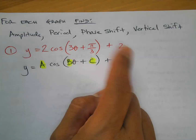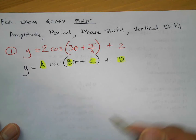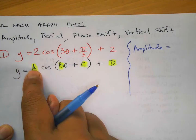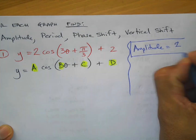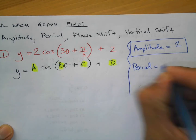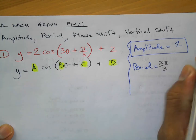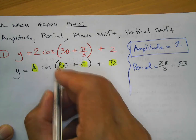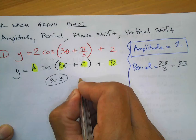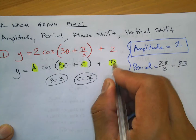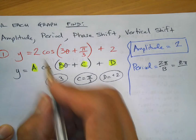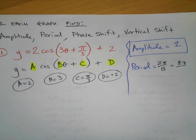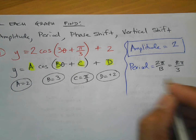We know a is 2 and b is 3. Right away, the amplitude is 2. For the period, we use the formula 2π over b, which is 2π over 3. So the period is 2π/3. Let me also write out: b equals 3, c equals π/3, d equals 2, a equals 2.